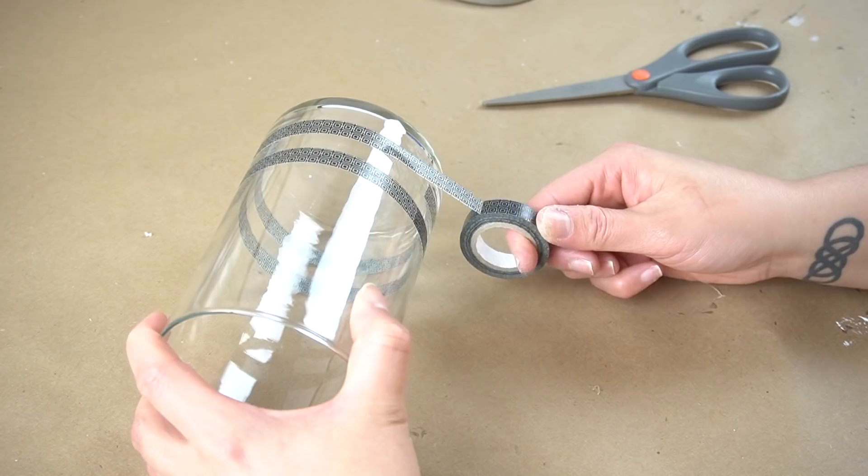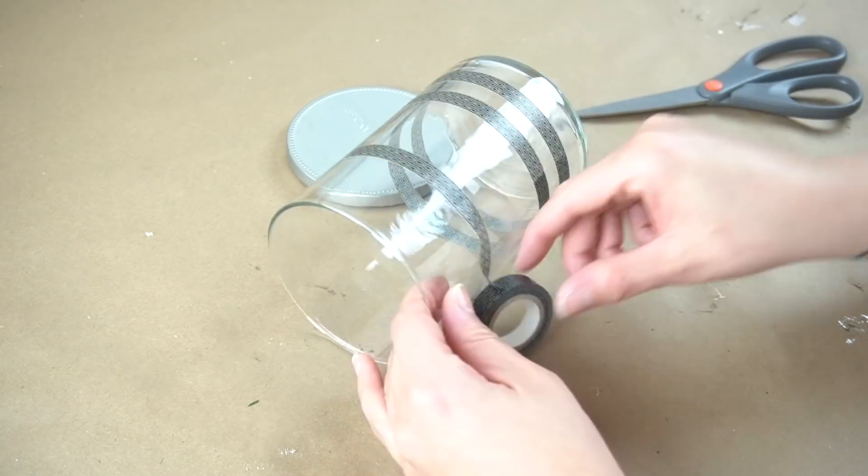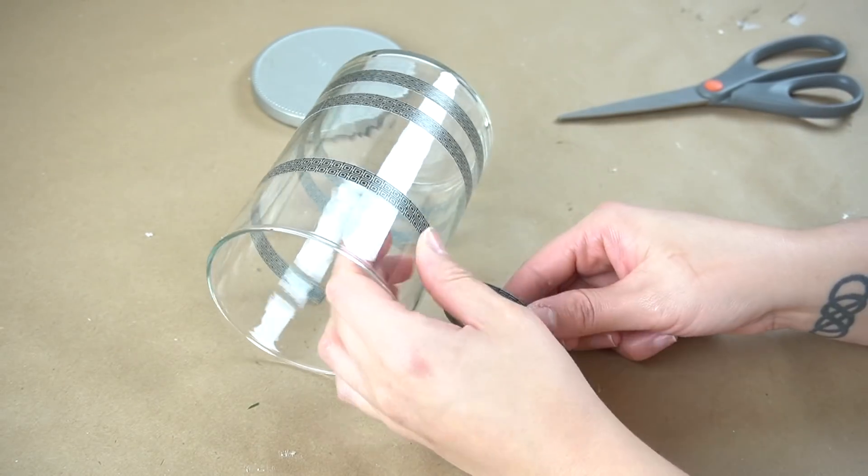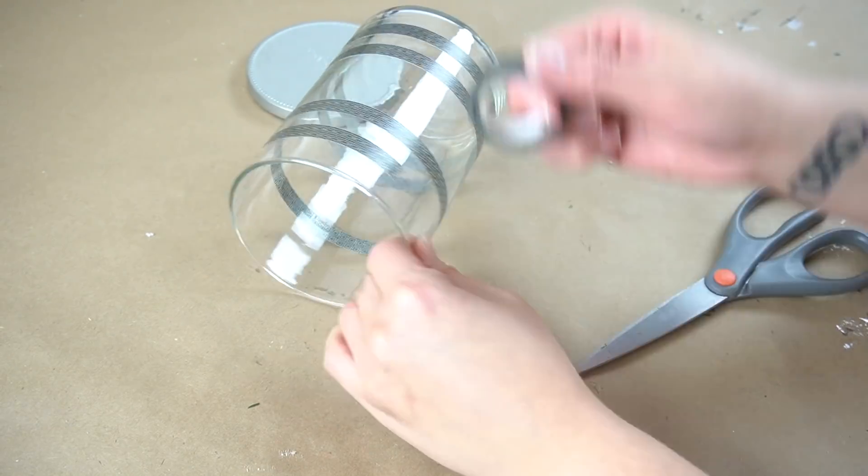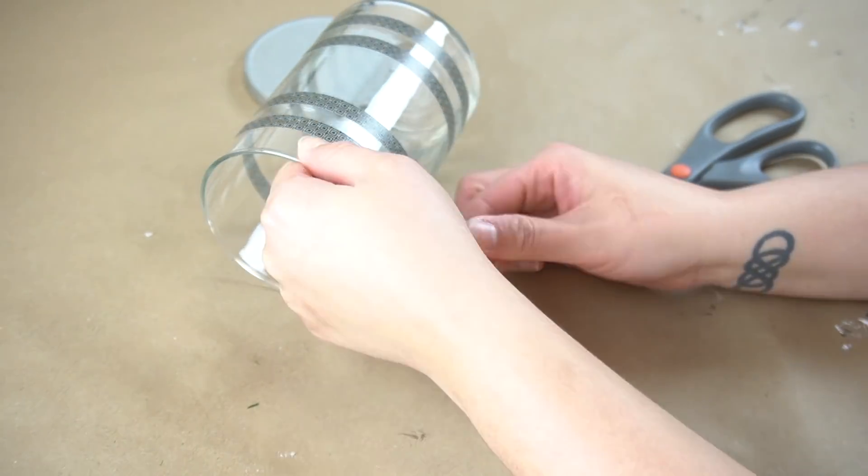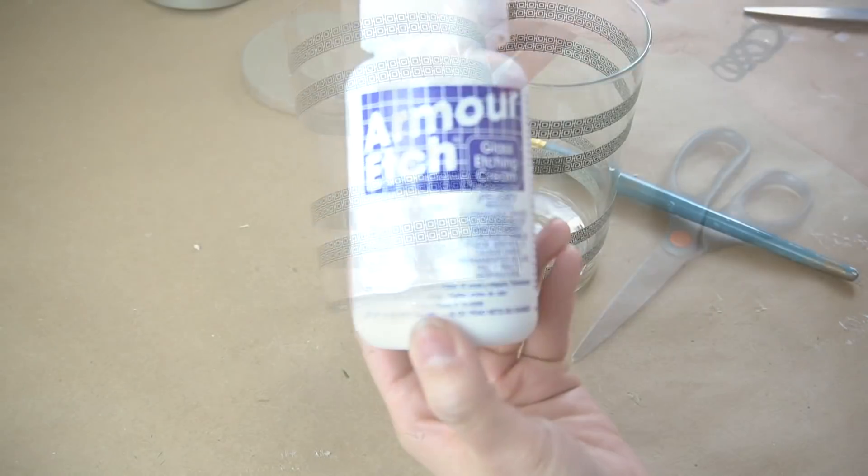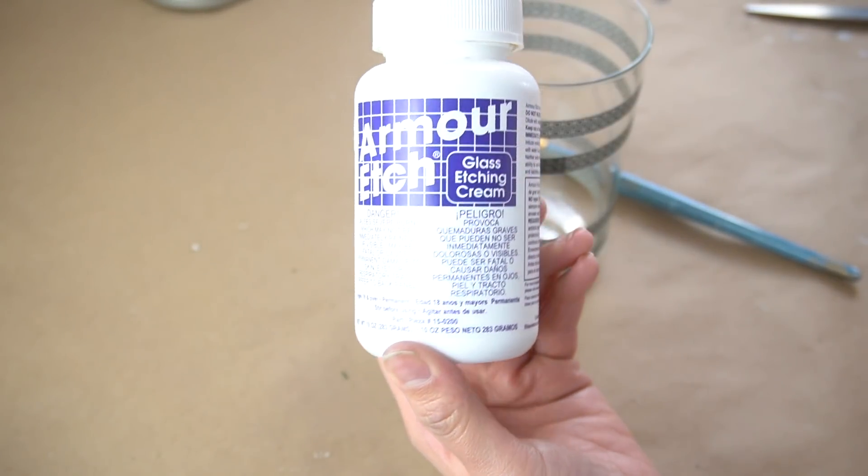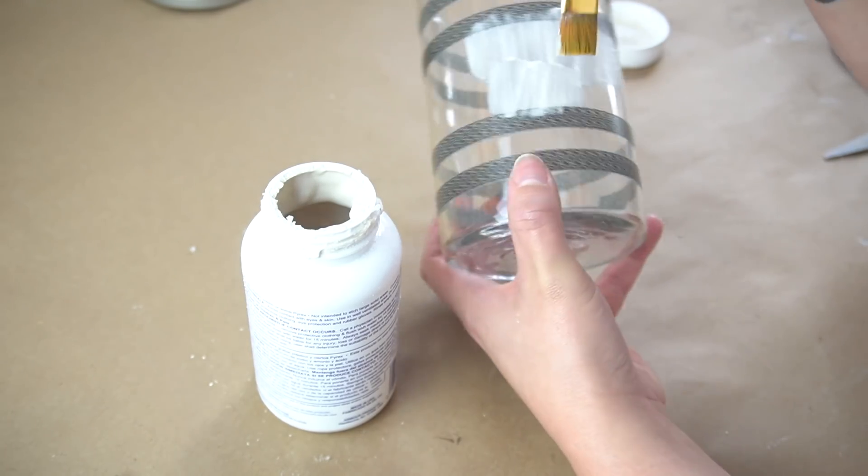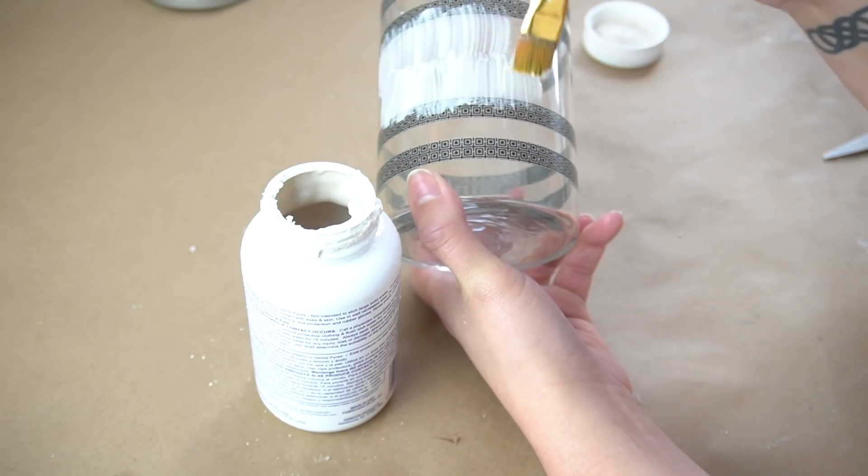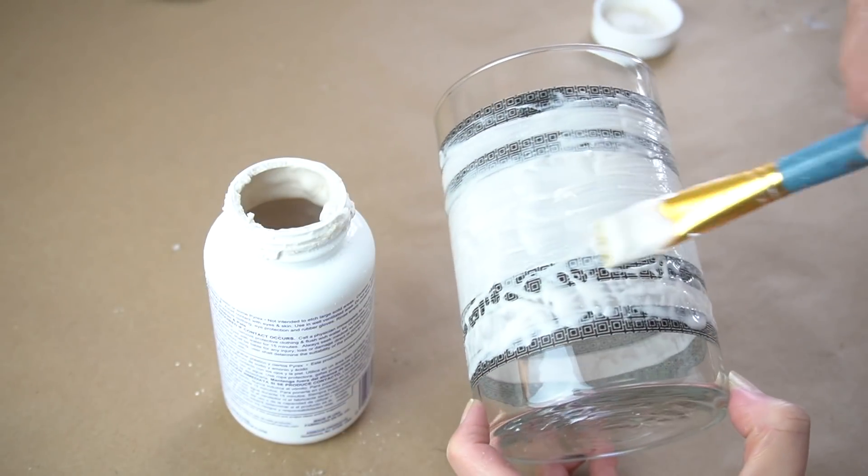I placed two stripes close together, and then I added two more on the other end. Next, I took some Armor Etch, and I began brushing it all over the parts of the glass that were not covered with the tape, leaving either end alone. So I just did the parts in between the tape. And you want to add this on very thick, and leave it on for about 15 minutes.